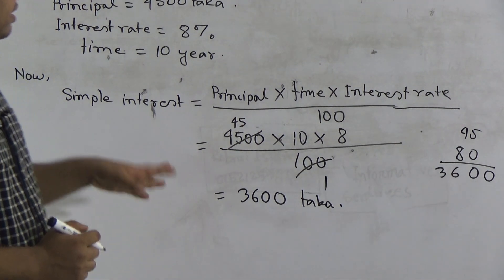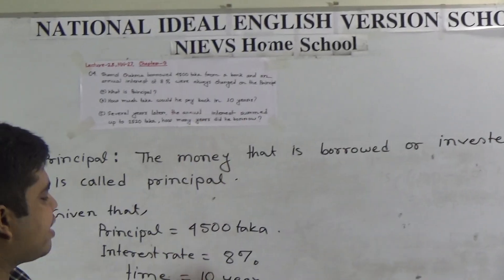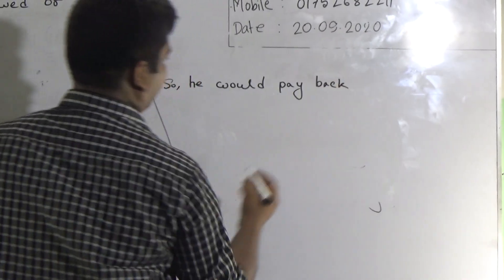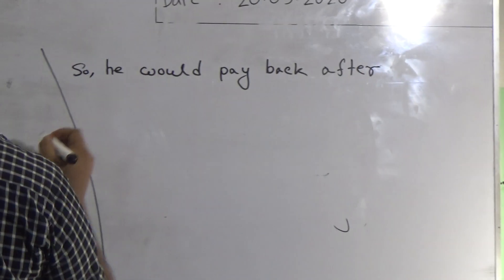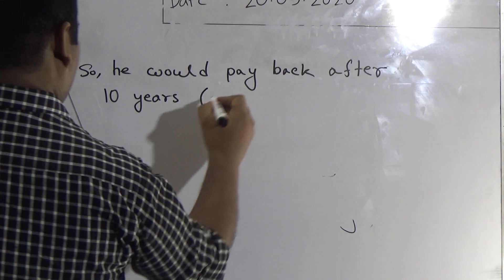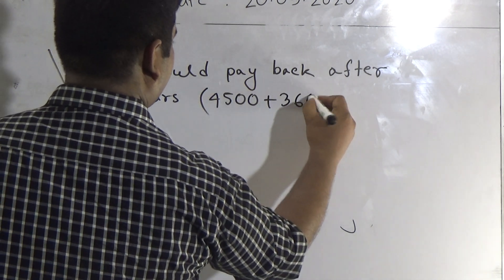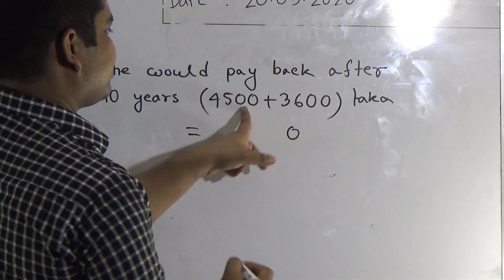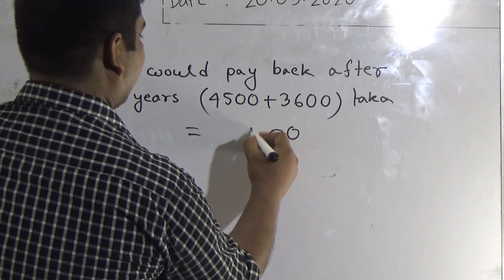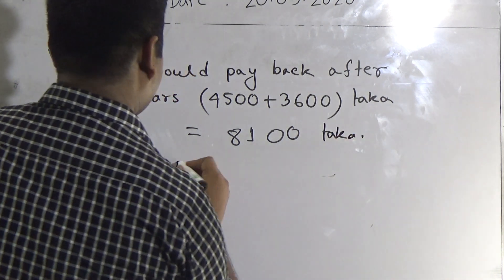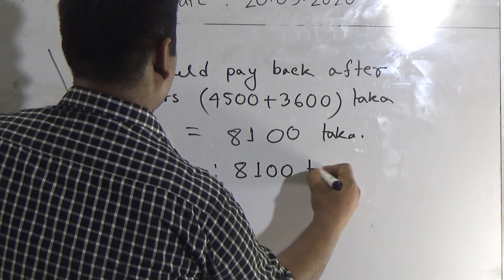The simple interest is 3600 Dhaka and the principal is 4500 Dhaka. So he would pay back after 10 years: 4500 plus 3600 Dhaka. Adding: 0 plus 0 is 0; 6 plus 5 is 11, carrying 1; 3 plus 4 plus 1 is 8. The answer is 8100 Dhaka.